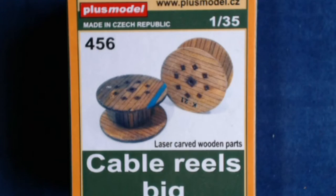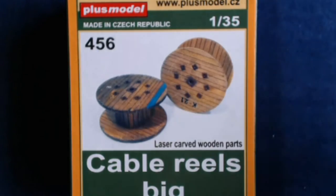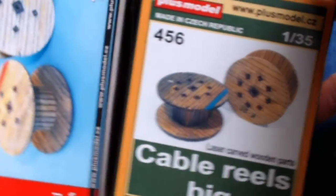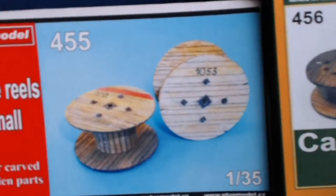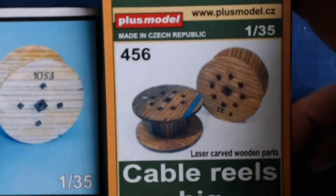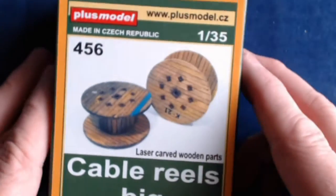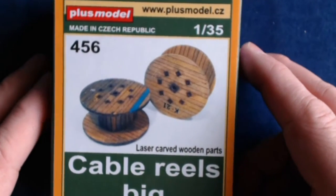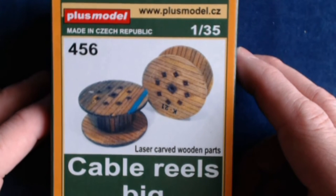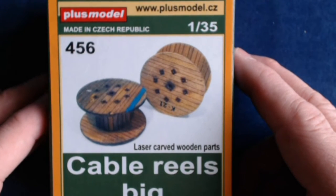This is the second one of these I've done. We did cable reel small which is in this box. Can anybody see the conundrum already? All right, well, we'll check these out. This is 456, again 1/35th scale from Czech Manufacturer Plus Model, Czech Republic. And we'll go ahead and take a look. Let's crack her open.